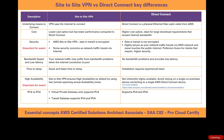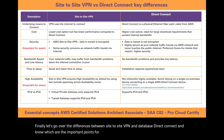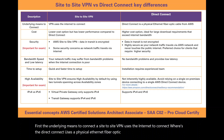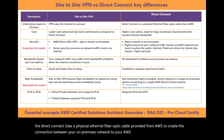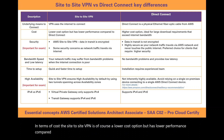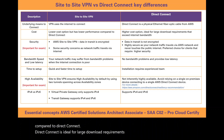Finally, let's go over the differences between site-to-site VPN and AWS Direct Connect, and the important points for the exam. First, the underlying means to connect: a site-to-site VPN uses the internet, whereas Direct Connect uses a physical Ethernet fiber optic cable provided by AWS. In terms of cost, site-to-site VPN is a lower cost option but has lower performance. Direct Connect is ideal for large download requirements that exceed the bandwidth offered by the internet.